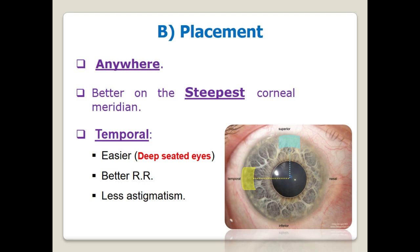Regarding incision placement, the incision can be constructed anywhere on the cornea. If you are planning for astigmatic control, place your wound on the steepest keratometry reading. There is good agreement that the temporal incision is better, especially in deep-seated eyes and surgery under topical anesthesia, as this approach improves the red reflex.